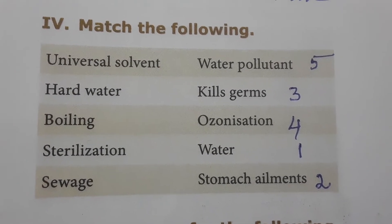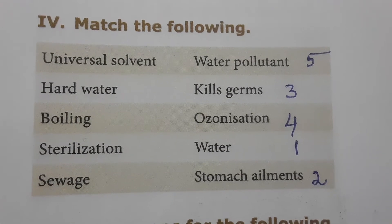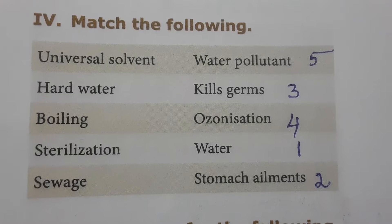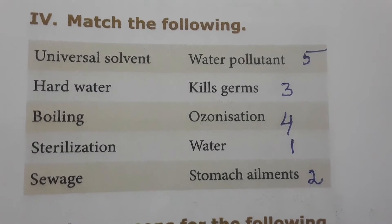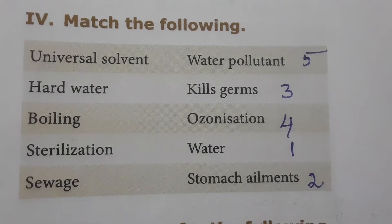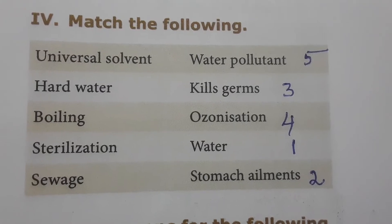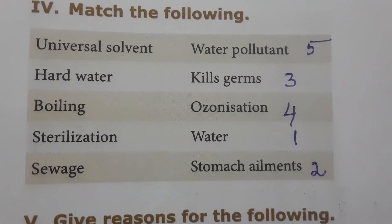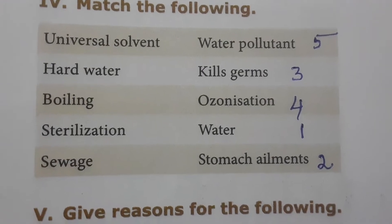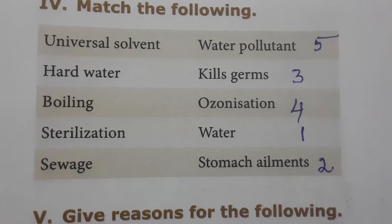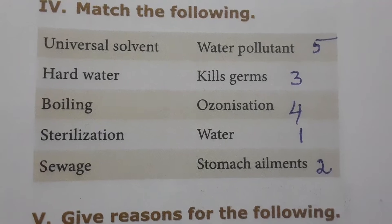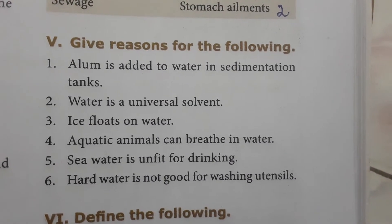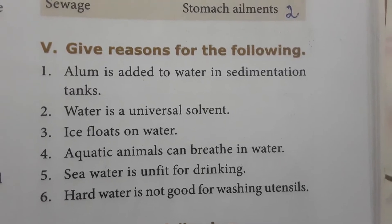The process used to sterilize water is chlorination. Sewage — sewages are a major threat to water bodies because when sewage enters a water body it makes the water non-potable, causing pollution. Give reasons: Alum is added to water in sedimentation tanks because alum can increase the sedimentation process.